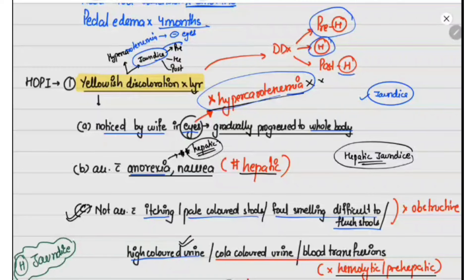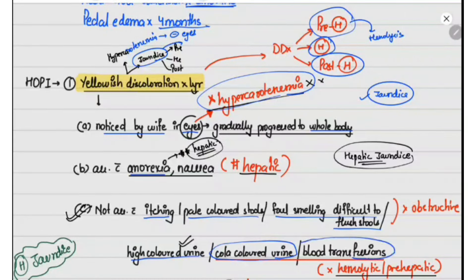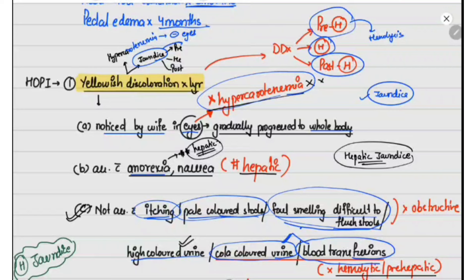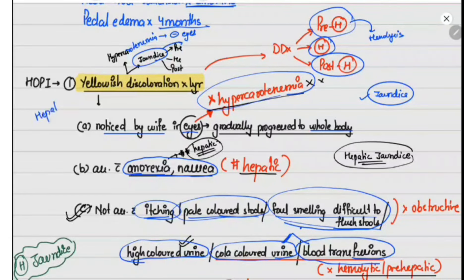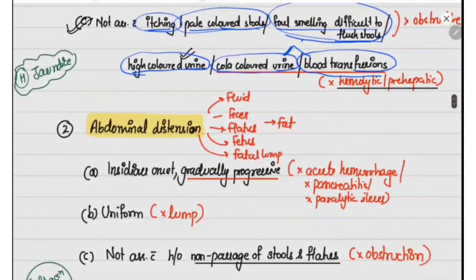As the patient has jaundice, it can be due to a pre-hepatic, hepatic, or post-hepatic cause. The pre-hepatic cause occurs most commonly due to hemolysis, in which case there will be cola-colored urine and possibly history of multiple blood transfusions — both of which are absent here. Post-hepatic cause would present with itching, pale-colored stools, foul-smelling difficult-to-flush stools, and high-colored urine — all of which are also absent. In hepatic jaundice, anorexia and nausea are characteristically present, as they are here. So from this history we can decode that this is probably a case of hepatic jaundice.